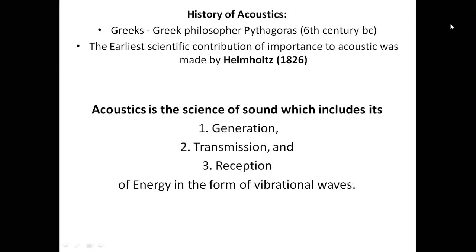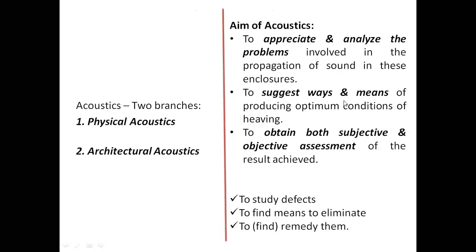Now what exactly is acoustics? You would have learned in physics: incident wave, reflected wave, transmitted wave. The generation, transmission, and reception of sound in the form of vibrational waves — that is called acoustics, generally called the science of sound. There are two branches of acoustics: physical acoustics and architectural acoustics. Rather than saying two branches, they actually go hand in hand. But now we will concentrate on architectural acoustics — the artificial part that we look into in the building. It involves finding acoustical defects, sound defects inside a building, finding ways to eliminate them, and arriving at a solution. That is the acoustical treatment we'll be talking about.